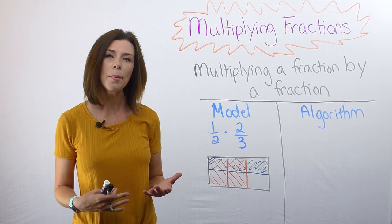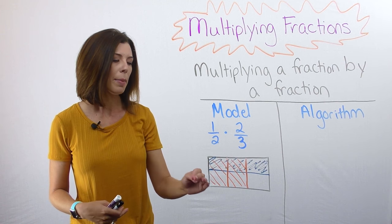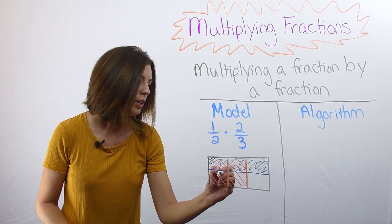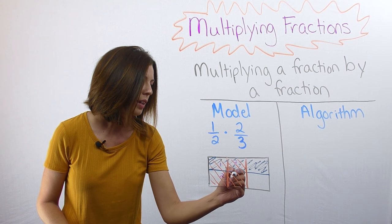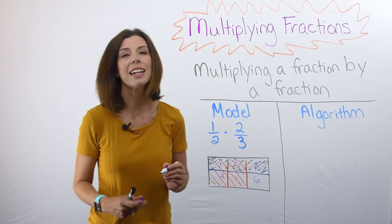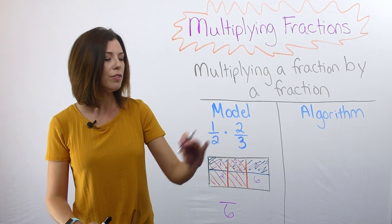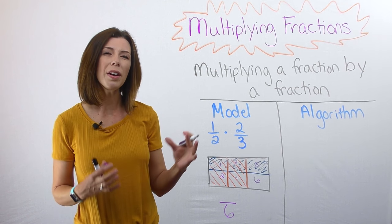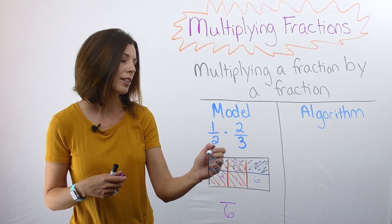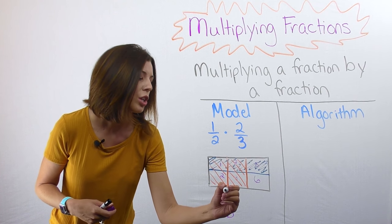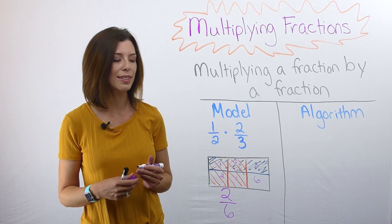Now I'm going to look at how many pieces did I cut my model into. So I can see that I've got one, two, three, four, five, six pieces in my new model. And out of those six pieces, I look at what are the overlapped shaded areas. So I can see I've got this guy right here and this guy right here, which is two copies of one-sixth.